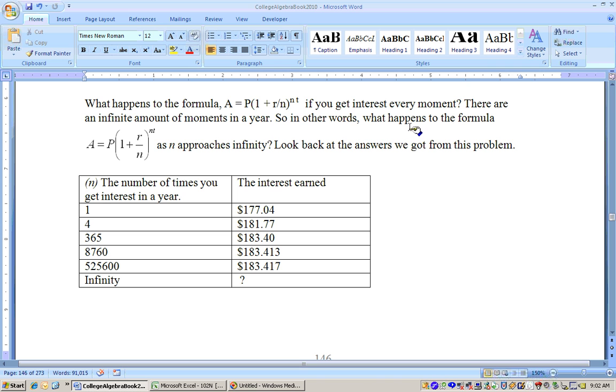Let's see what happens to this formula as you get interest every moment. There are an infinite amount of moments in a year. In other words, we're saying what's happening to this formula as I substitute in values for N, the number of times you get interest, as that gets larger and larger and approaches infinity. Here's my interest earned for this particular problem with five years, $500 at 6.25%. We ended up with $177.04 compounded annually, $181.77 compounded quarterly, a difference of about $4.73. When we jumped clear up to daily, it only jumped up about $2.37, not that much of a jump.